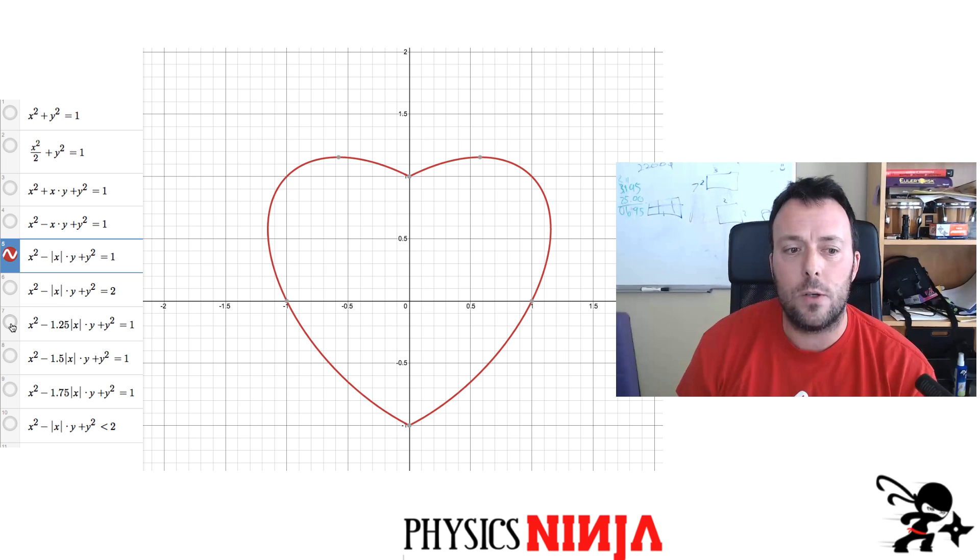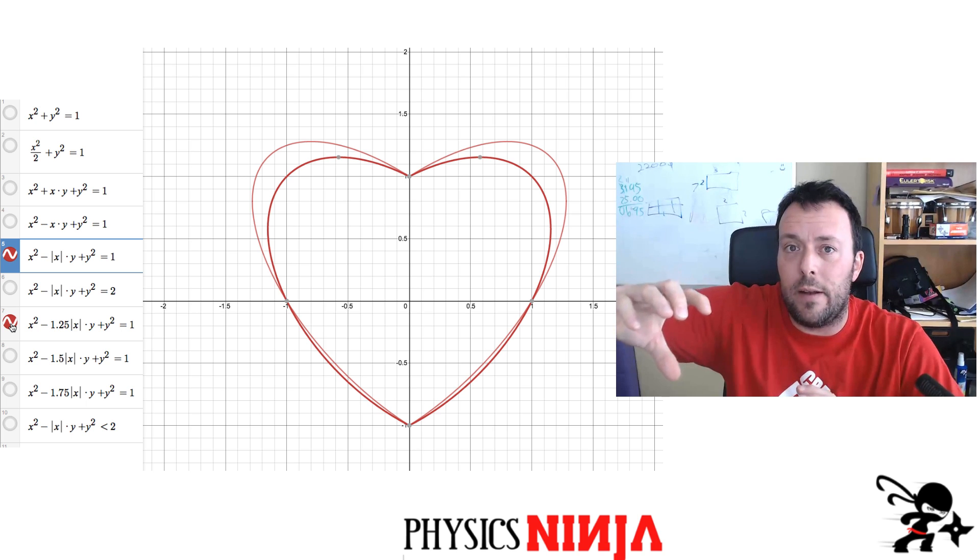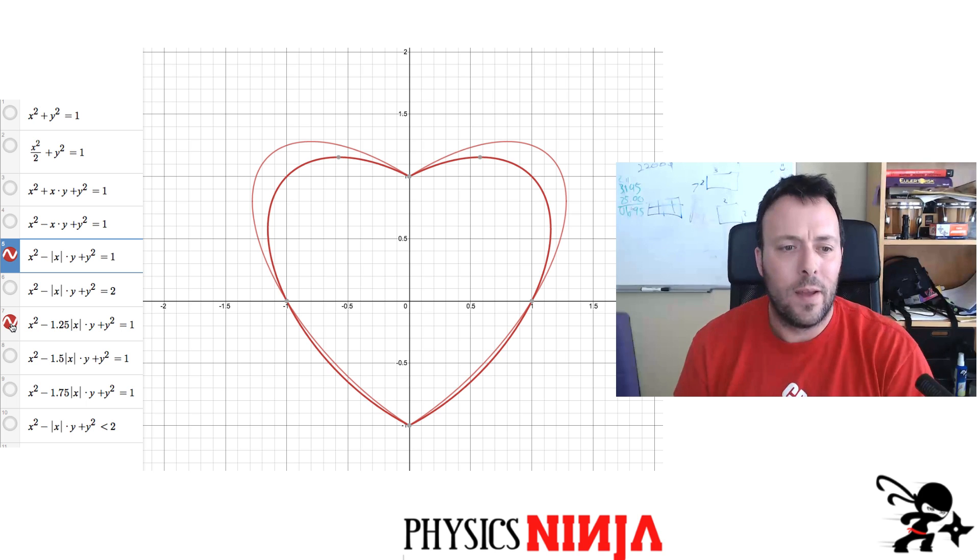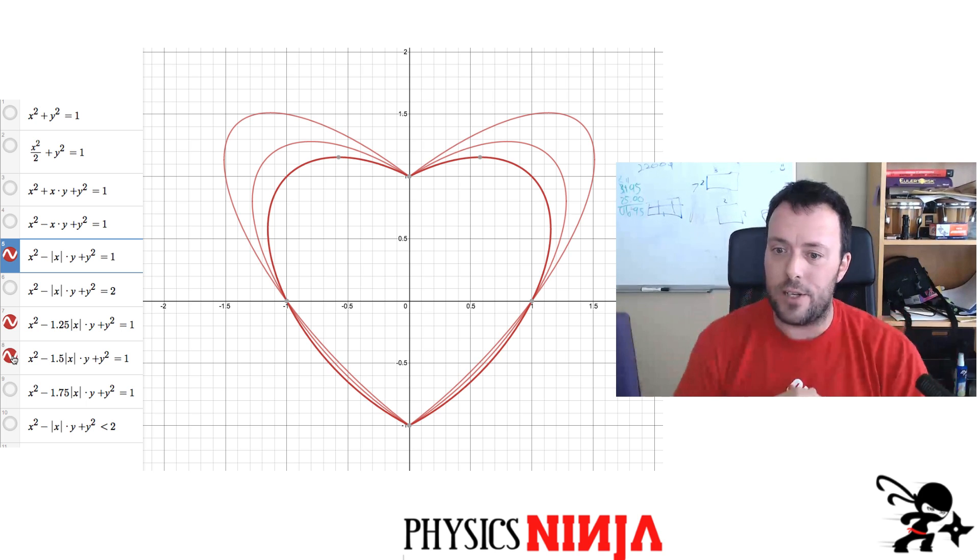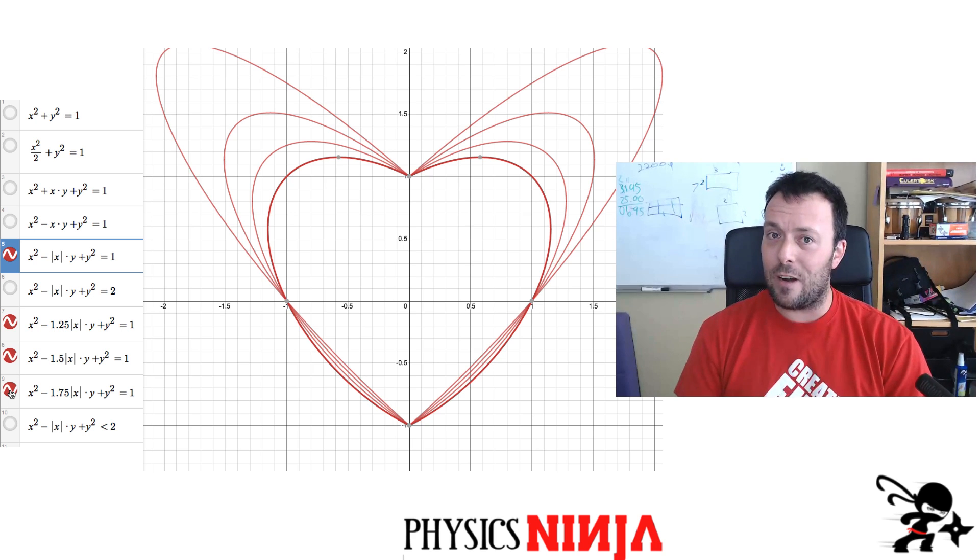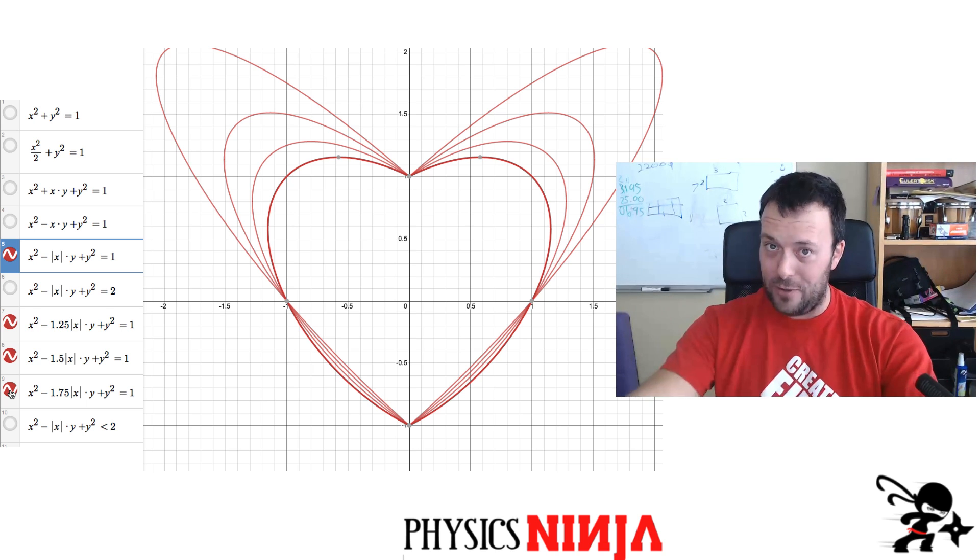Instead of one, what if I go to 1.25? See, notice it's kind of stretched out a little bit. It still crosses the x and the y axes at plus or minus one. Let's go to negative 1.5. I've kind of really stretched it out a little bit more. Maybe 1.75. Be a little bit careful. You don't want to go too big with that number. We're going to go from ellipses to hyperbolas, and you don't want to do that for Valentine's Day.